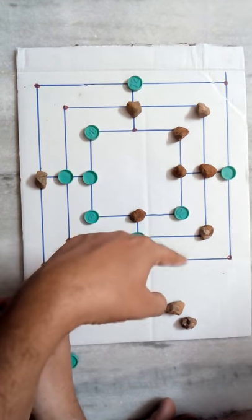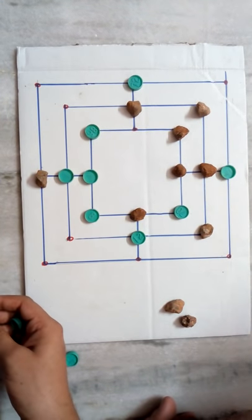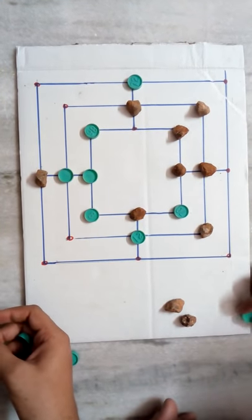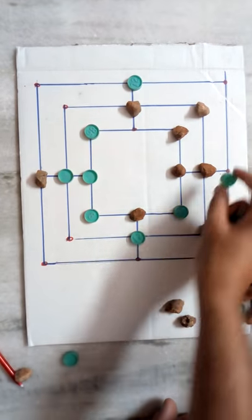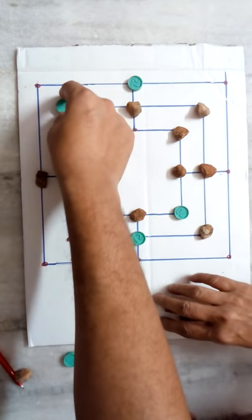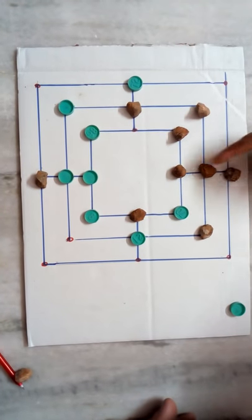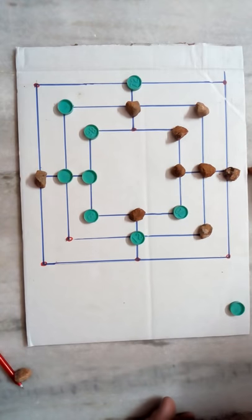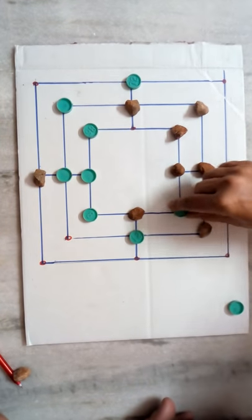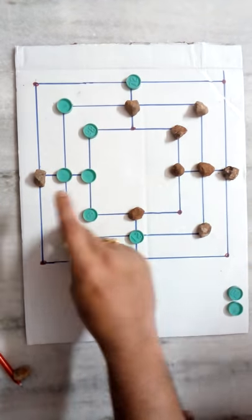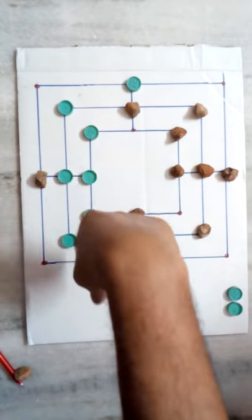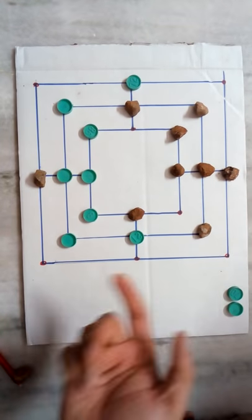This is a daddy. Now she has to take my coin. She has taken the coin. Again this is a daddy, so she will take my coin. Again one more coin. And this is my daddy, so I have to remove one coin.